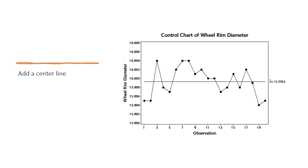Next, we add a center line. This may be based on known values or standards, or it can be computed from the data. For the wheel rim diameter data, we'll draw the center line as the mean of the data.